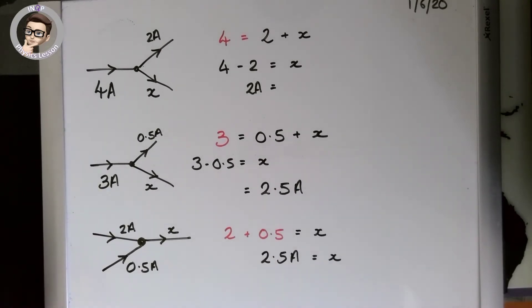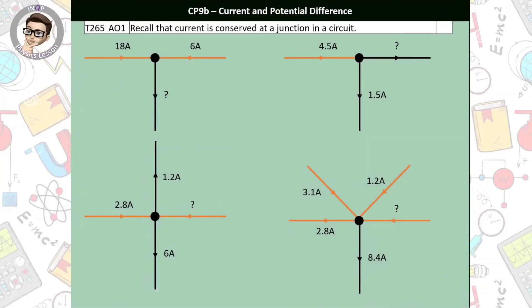I'd like you to have a go at four questions on the PowerPoint. Notice the colours: orange wires are flowing into the junction and black wires are flowing out — the question mark tells you what to find. First: 18 and 6 flowing in. Second: 4.5 flowing in, 1.5 flowing out. Third: 2.8 flowing in, unknown flowing in, but we know what's flowing out. Fourth: 4 flowing in, 1 flowing out. Pause the YouTube video, draw these down, and have a go.